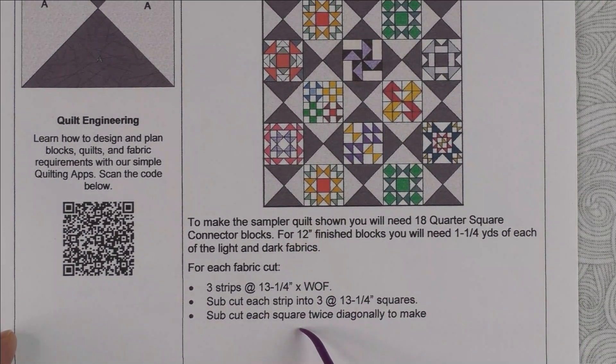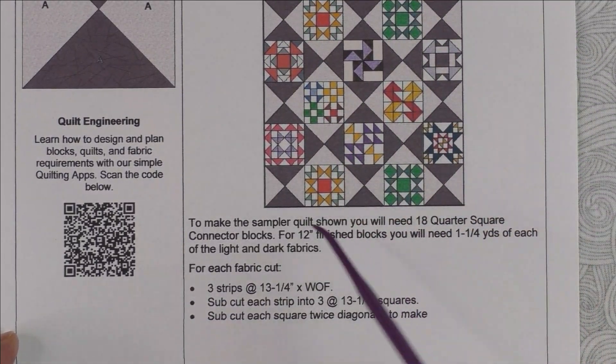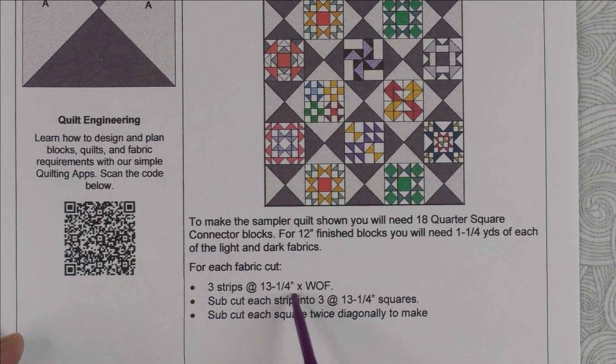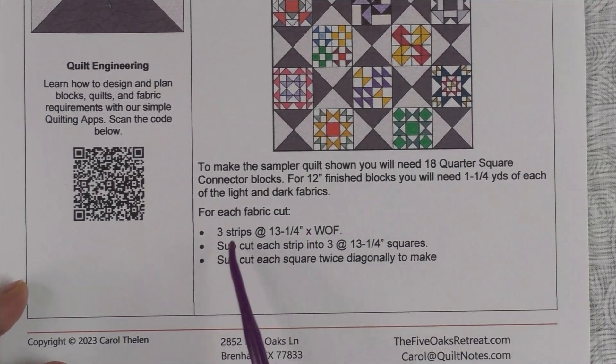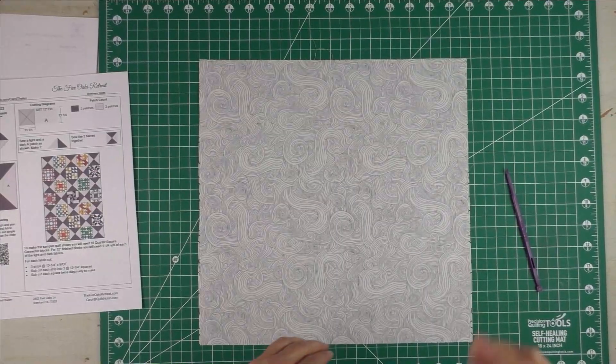I have the instructions down here if you want to make a sixty by eighty-four inch quilt with five blocks across and seven down. If you cut one strip of fabric thirteen and a quarter inches times the width of fabric, you'll get three of these big squares.